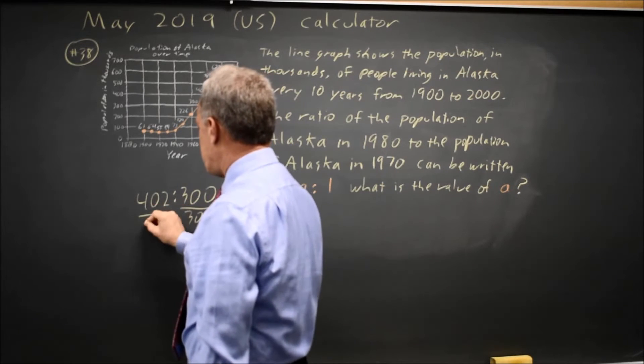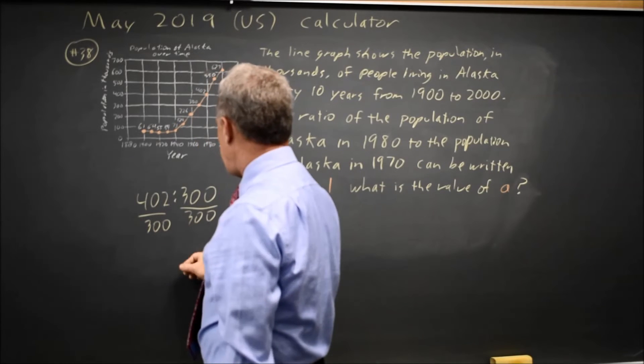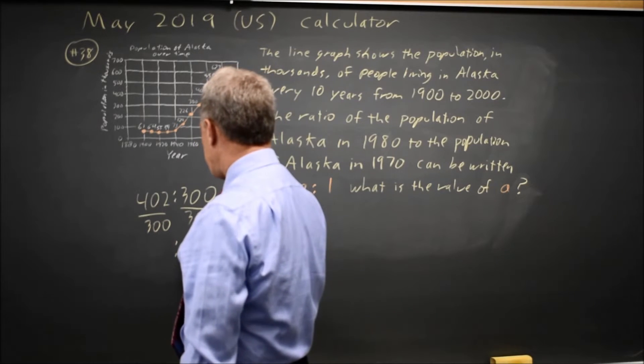So I'm going to divide both sides by 300, and that gives me 402 over 300 to 1.